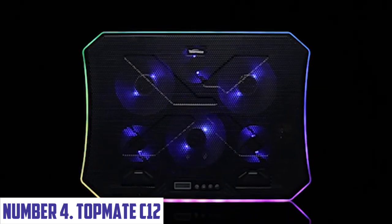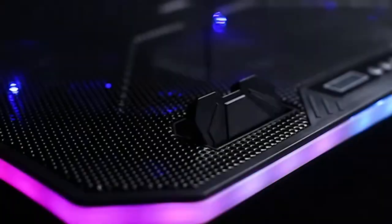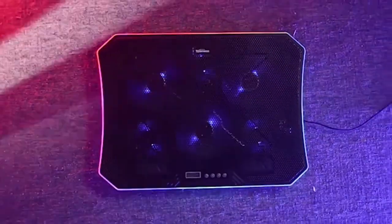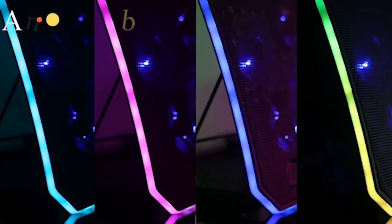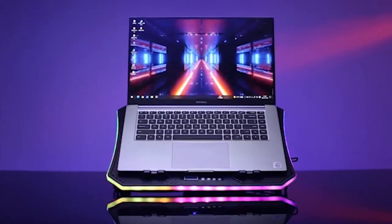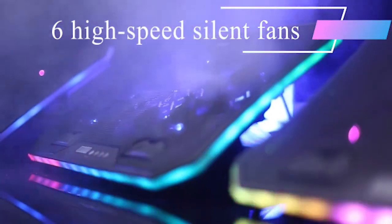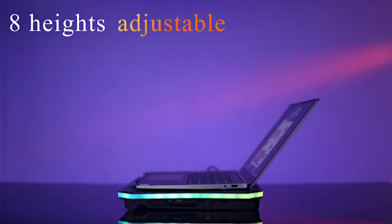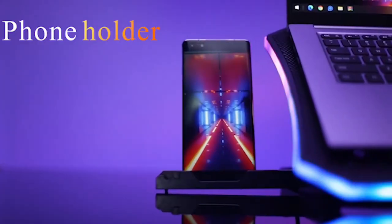Number 4. Topmate C12. Are you tired of being held back by dead batteries or limited power sources on your next adventure? Look no further than the Topmate C12, a revolutionary portable power station designed to keep you charged and powered up wherever you go. With its compact and lightweight design, this power station is perfect for camping, road trips, festivals, and more. The Topmate C12 boasts an impressive 12V/100A capacity, providing up to 600W of continuous power output. This means you can charge your devices, laptops, and even small appliances on the go.